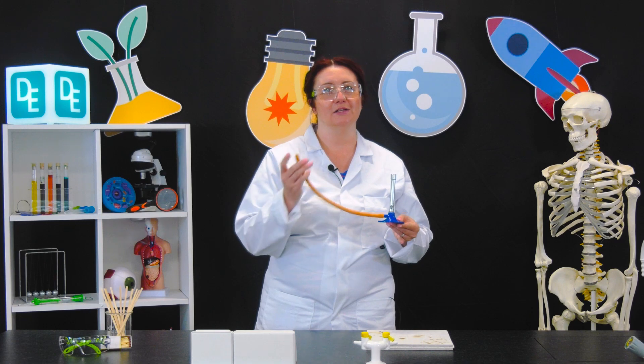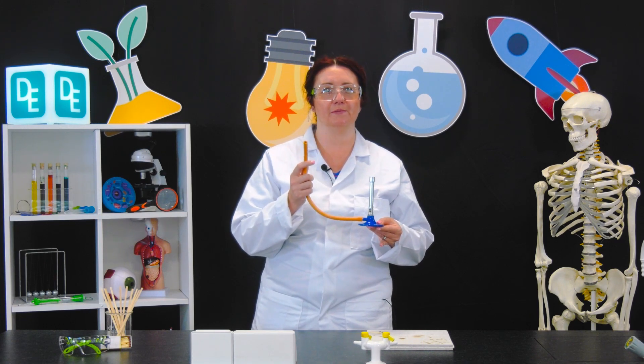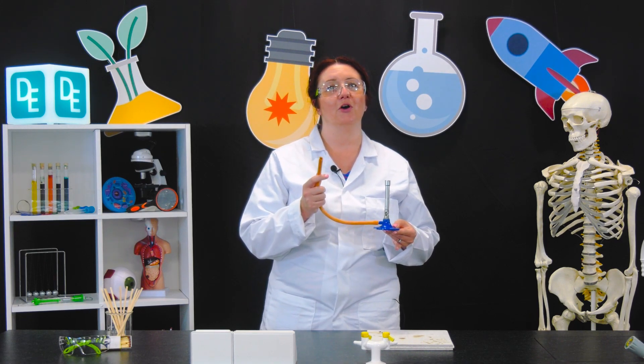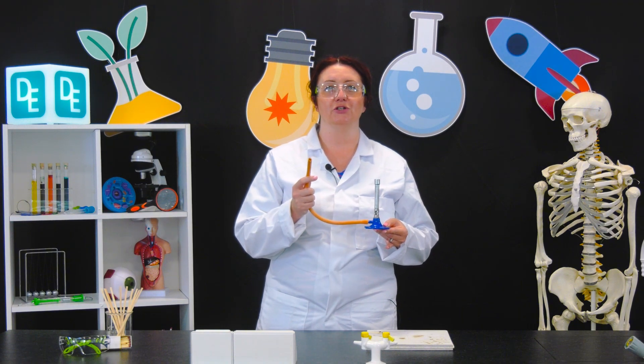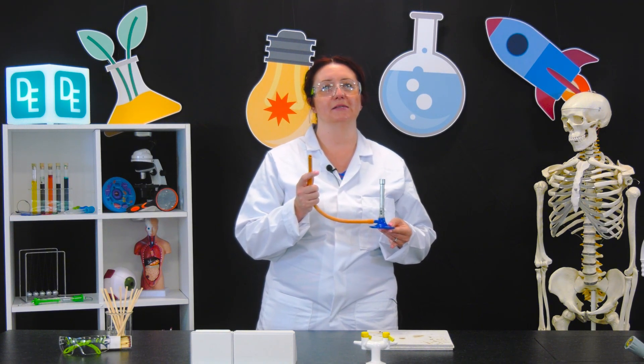First, connect the rubber hose from the Bunsen burner to the gas tap on your lab bench. Make sure it's snug and secure.